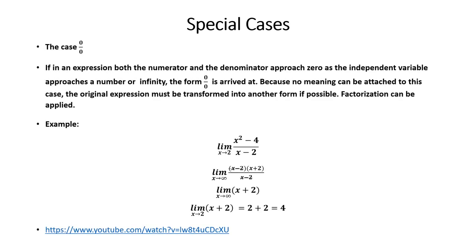So, the second special case is the case 0 divided by 0. If an expression, both the numerator and the denominator, approach 0 as the independent variable approaches a number or infinity, the form 0 over 0 is arrived at. Because no meaning can be attached to this case, the original expression must be transformed into another form, if possible. And factorization can be applied here.